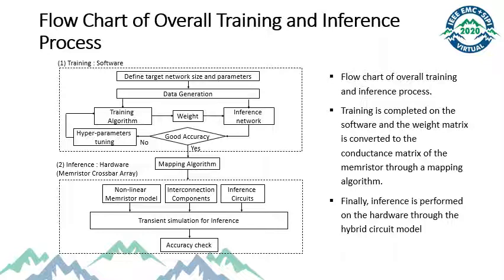Then, the optimized weight matrix is transferred to the memristor crossbar array with a proper mapping algorithm for inference. Since the array operates in an analog way, nonlinear memristors and interconnection parasitic, which can directly affect the operation value should be considered. Therefore, nonlinear current voltage memristor model, interconnection RLC components, and additional inference circuits are co-modeled in SPICE. Finally, transient simulation is repeated for inference. Then, the accuracy of DNN inference is verified with signal integrity effect.